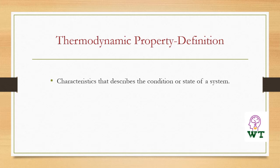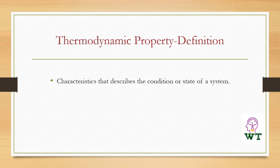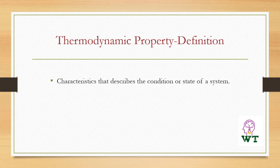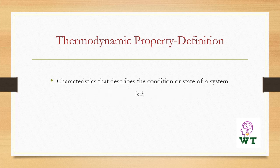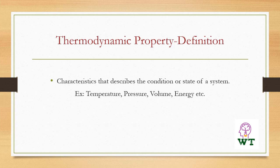Any characteristics of a system in which its physical properties are described is called a property. Similarly, the characteristics which can be used to describe the condition or state of a system is called a thermodynamic property. For example, temperature, pressure, volume, energy, etc. are considered as thermodynamic properties.